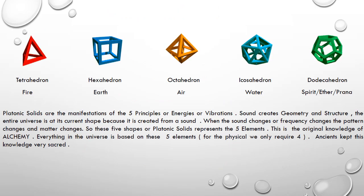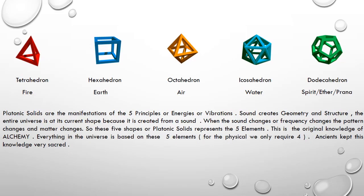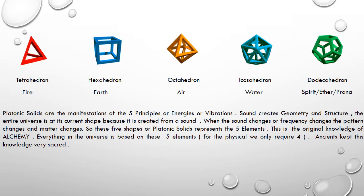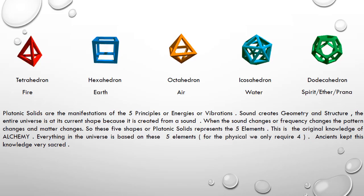Platonic solids are the manifestations of the five principles, energies, or vibrations. Sound creates geometry and structure. The entire universe is at its current shape because it is created from a sound — the cosmic vibration of Ohm. When the sound frequency changes, the pattern changes and matter changes. So these five shapes, or platonic solids, represent the five elements. This is the original knowledge of alchemy. Ancients kept this knowledge very sacred.